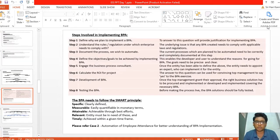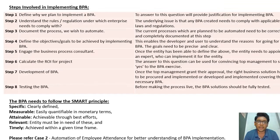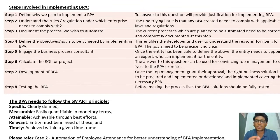Next, we look at the eight steps involved in BPA. Step one: define why we plan to implement BPA — answering this question provides justification. Step two: understand the rules or regulations under which the enterprise needs to comply.